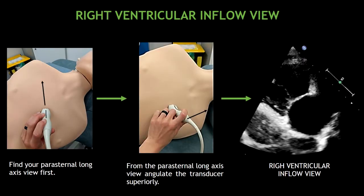The next view is the right ventricular inflow view. To obtain this view, the first thing you have to do is find your parasternal long axis view. Then, from the parasternal long axis view, angulate the transducer superiorly.